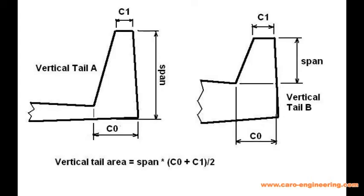It is not always obvious where the fuselage ends and the vertical tail starts. This sketch shows two different vertical tail designs. For vertical tail A, it is pretty obvious what the area is. Less so for tail B, which blends much further into the fuselage. Although one could determine the tail area for B in the same manner as for tail A, it is not effectively the same. Because tail B has a much shorter leading edge, it is likely going to be less effective.